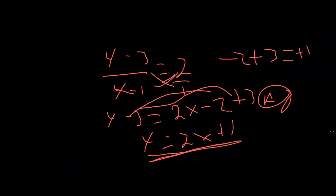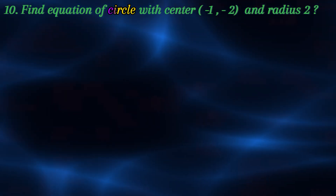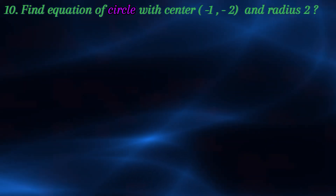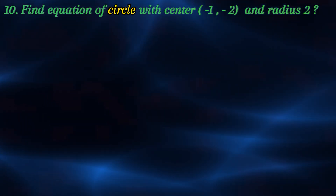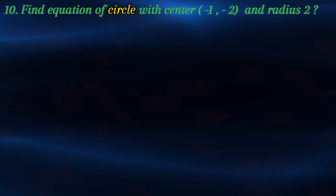Find the equation of a circle with center (-1,-2) and radius 2. The standard formula for a circle involves the center coordinates and the radius. The formula is (x minus x-naught) squared plus (y minus y-naught) squared equals r squared.